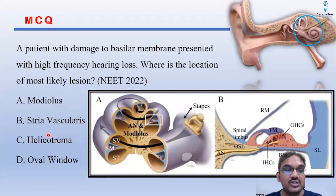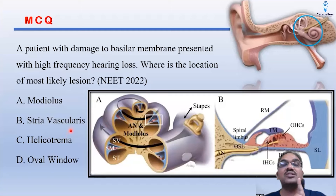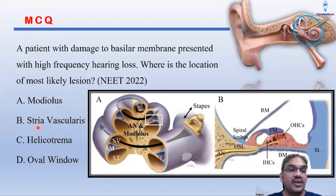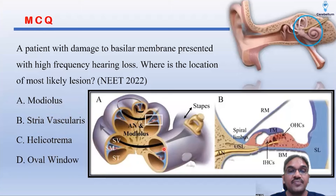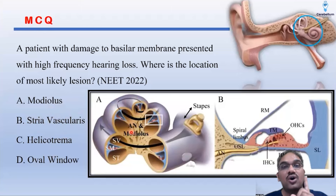So in the options, you have to search for the structure present near the basal coil of the cochlea. If you consider the stria vascularis, it is present on the lateral wall surrounding the entire cochlea throughout. So even if the stria vascularis gets affected, all frequencies should be affected — not just high frequencies.